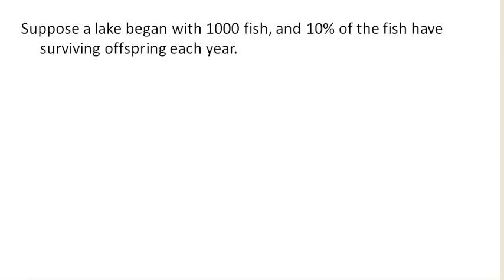Suppose a lake began with 1,000 fish and 10% of them have surviving offspring each year, and we want to talk about how this population of fish is growing. This is a different type of model than we've looked at before, because the growth is not by a constant number of fish each year, but instead by a percentage of fish. Let's see why that makes a difference.